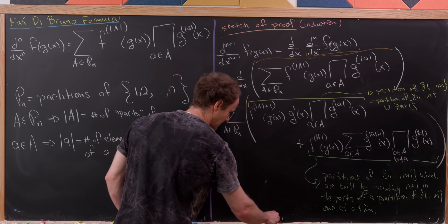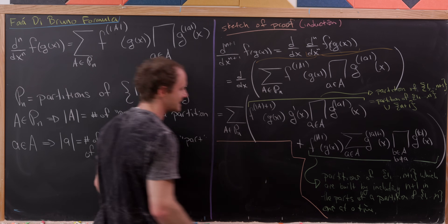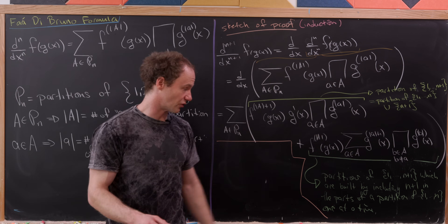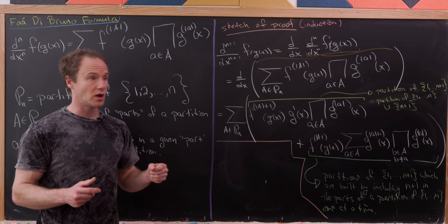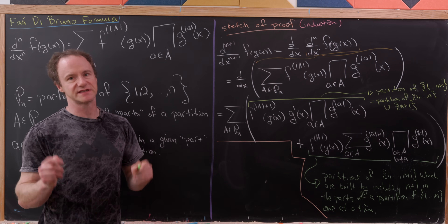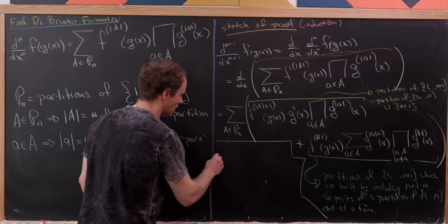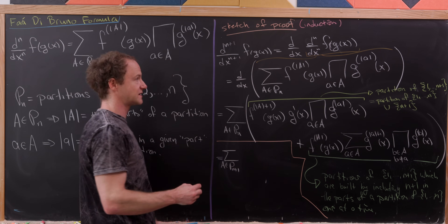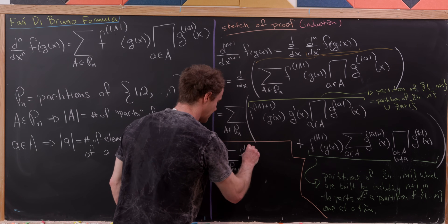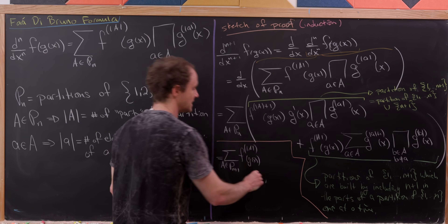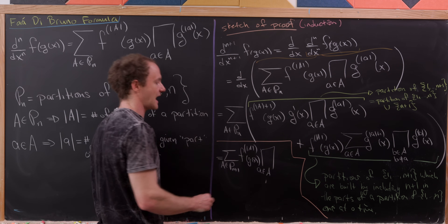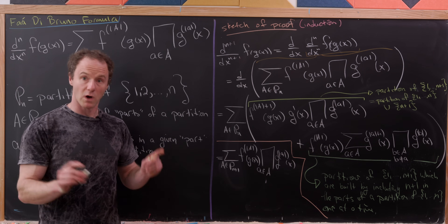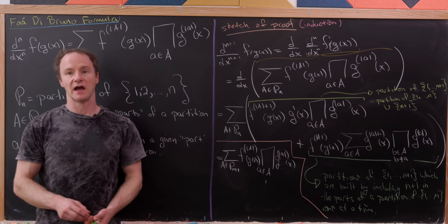What we can see is that the yellow description and the green description together account for all partitions of {1,...,n+1}. So after re-indexing, this becomes the sum as A ranges over P_{n+1} of the |A|-th derivative of f(g(x)) times the product over all a in A of the |a|-th derivative of g(x), which is exactly what we needed to finish the proof by induction. And that's a good place to stop.